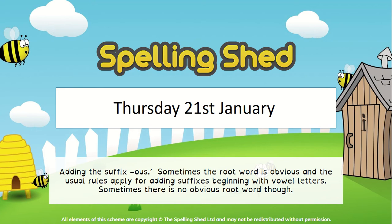We're going to continue looking at the suffix, adding the suffix O-U-S. Sometimes the root word was obvious and we could apply the rules. Sometimes there wasn't an obvious root word.